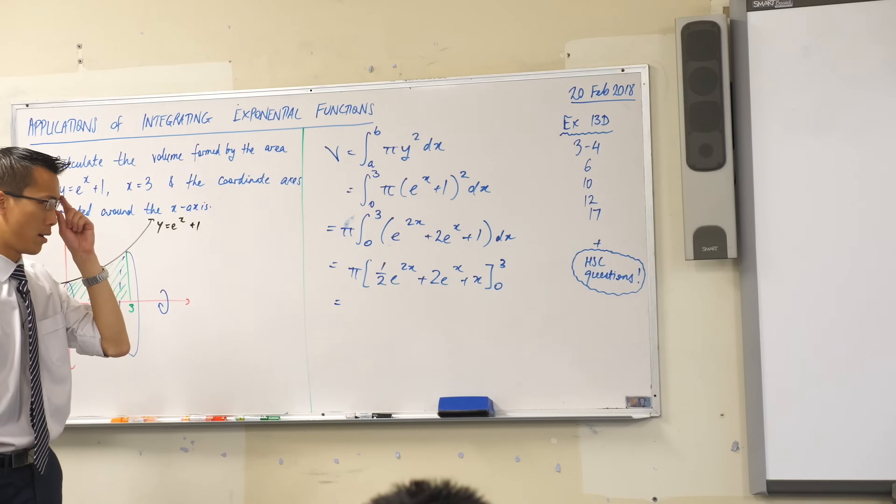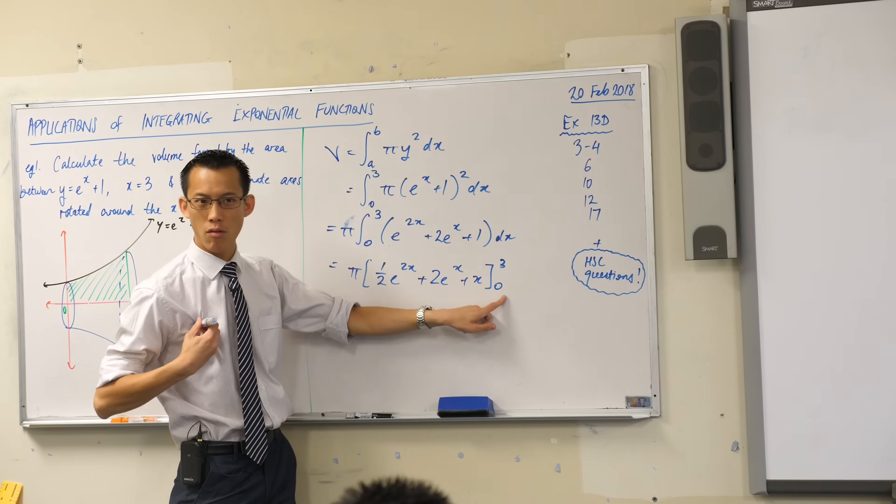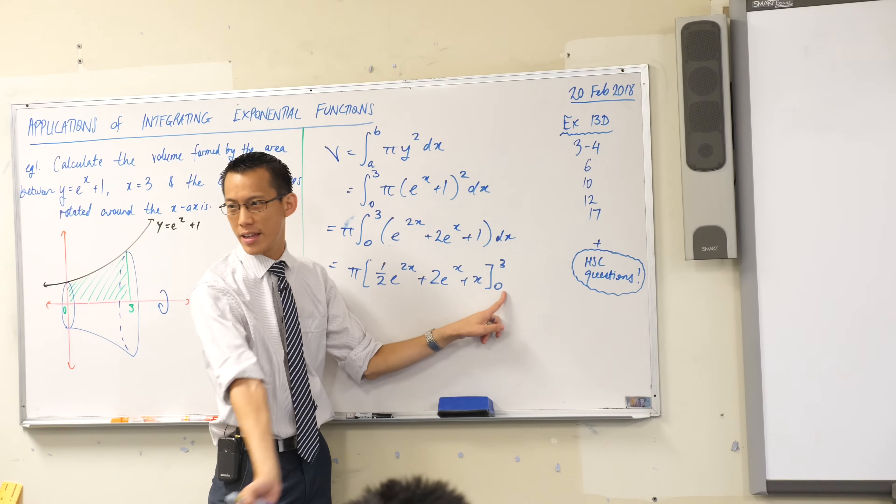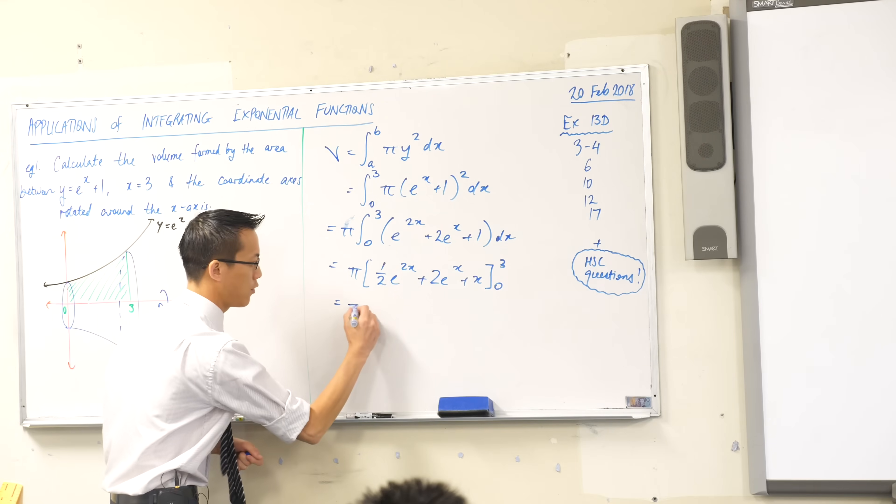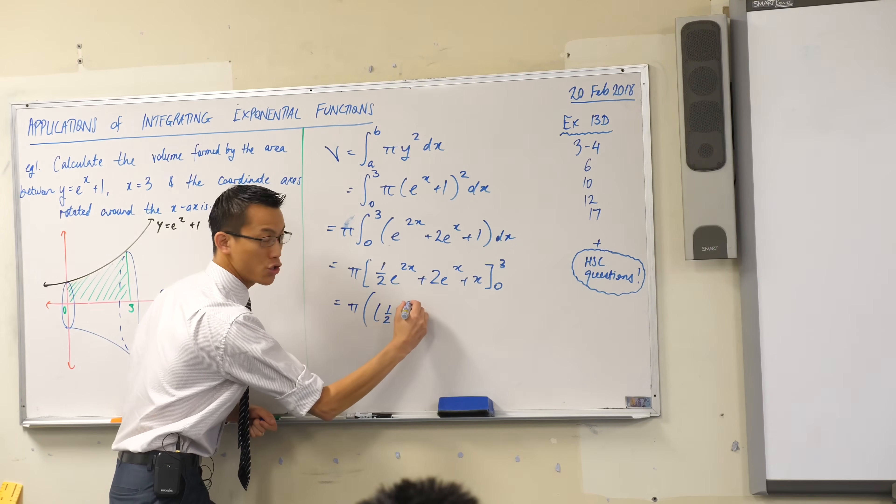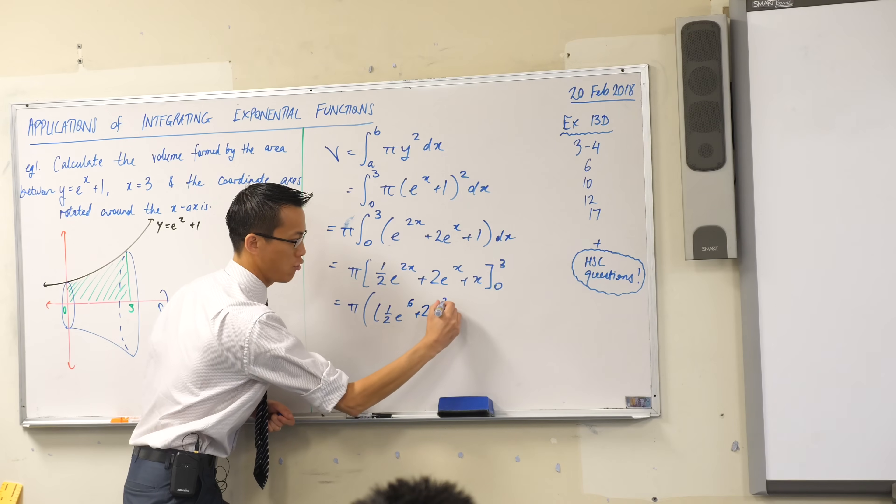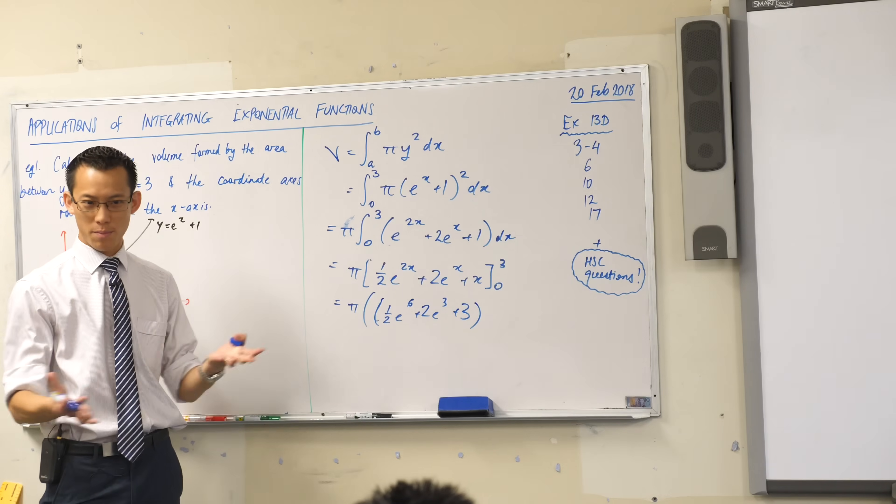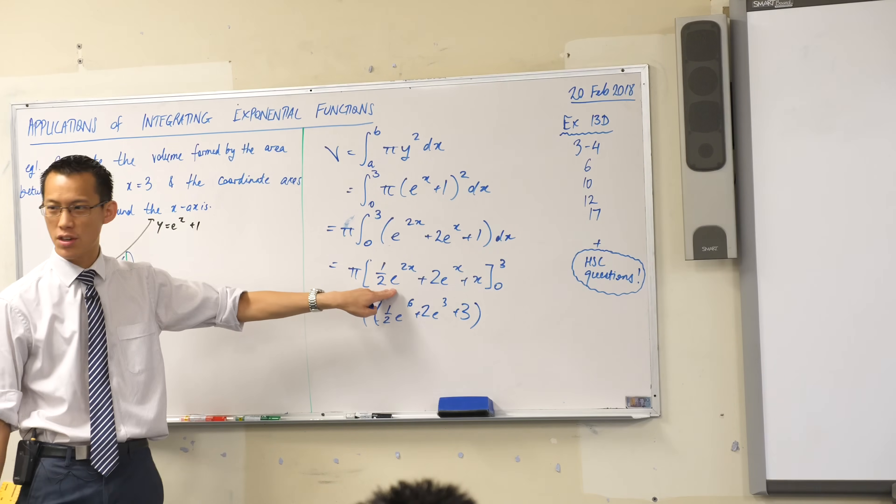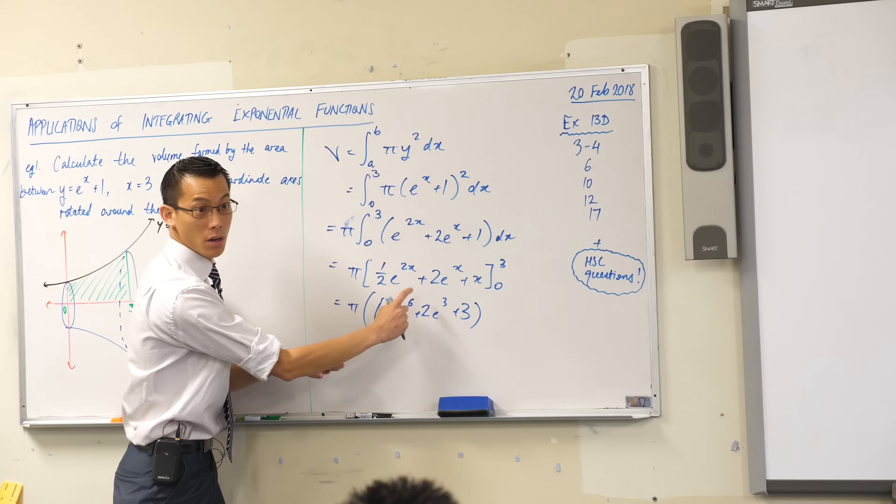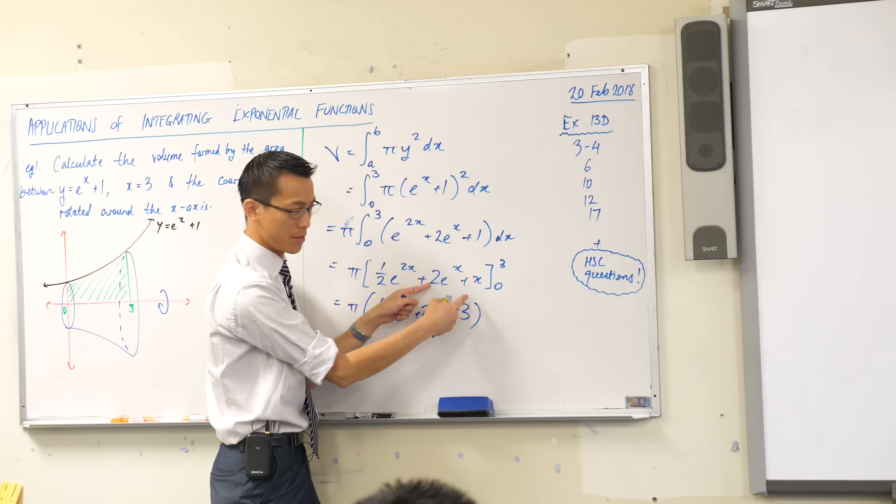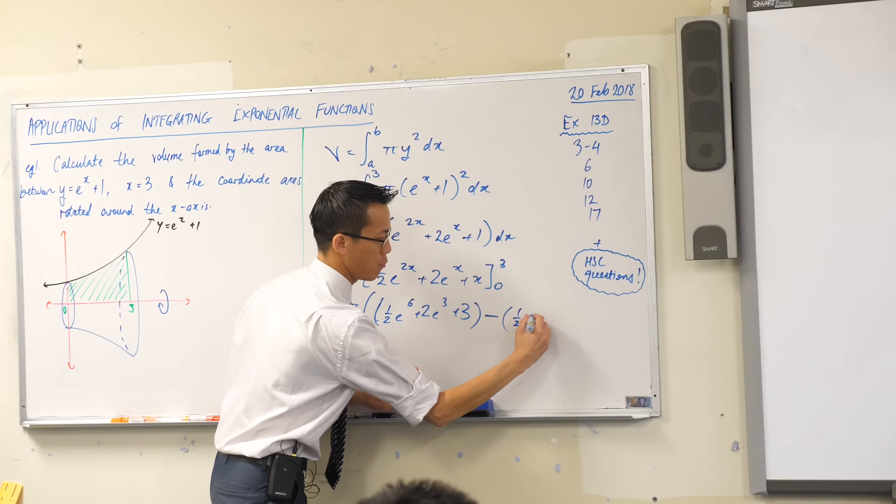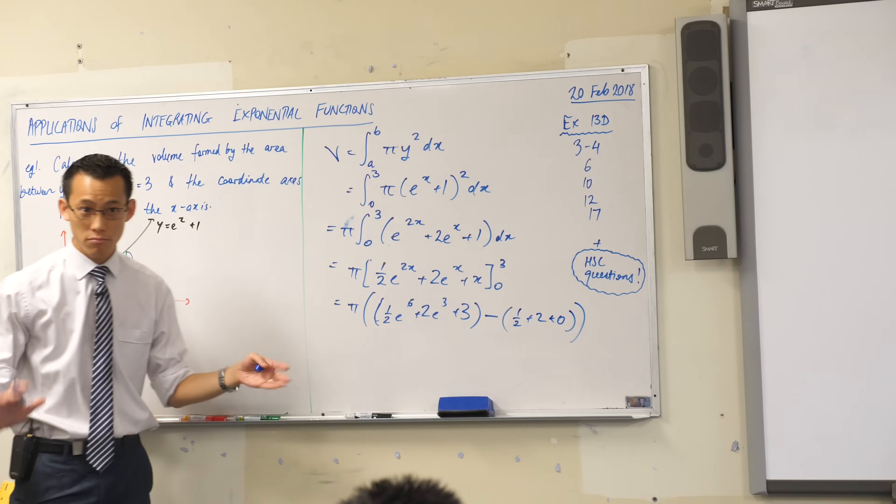Last potential curveball in here. It's easy to fall into the trap that when zero is your lower boundary, which it very frequently is, it's really tempting to think the zero just evaluates out. The only thing that really matters is the top boundary, and then off you go, which would give you a half e to the 6 plus 2e cubed plus 3. That would be the upper boundary. But of course, the lower boundary doesn't just become zero. Because when you put zero in here, what does this first term become? It'll be a half times one, and then this is going to become two times one. So you've got important things there that you want to write down.